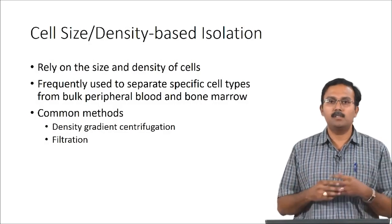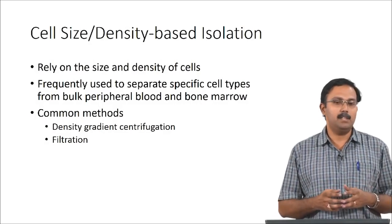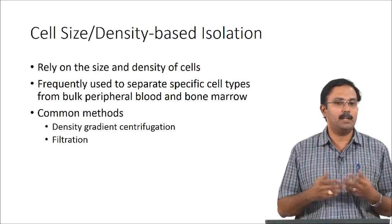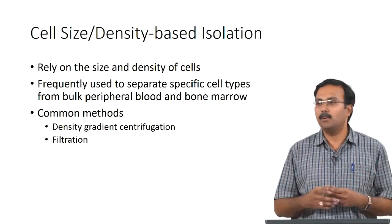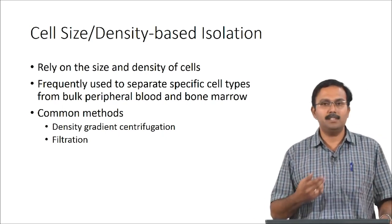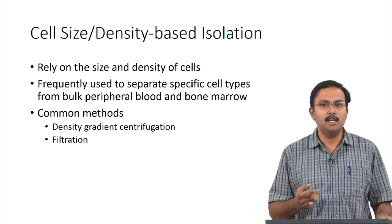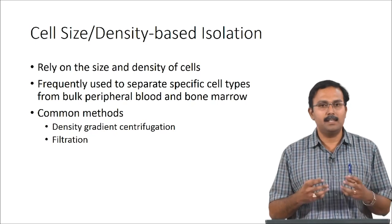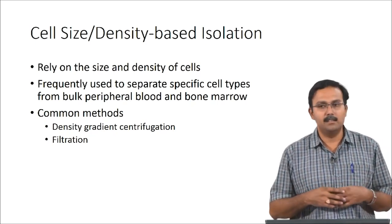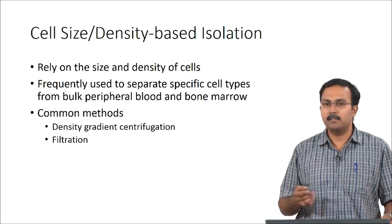We will now talk about how size and density of cells can be used for separation, as well as cell morphology and physiology, and surface markers such as surface antigens. First, we will talk about size and density-based isolation. This is actually a crude way of separating, but it is quite effective for certain types of cells and is done extensively. It relies on cell size and density, and techniques like simple centrifugation or filtration are used.